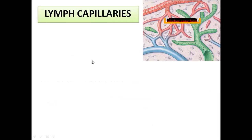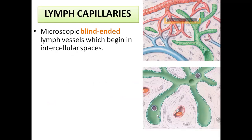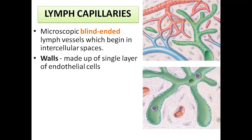Lymph capillaries are microscopic, blind-end lymph vessels which begin in intercellular spaces. If you observe a lymph capillary, they are lined with endothelial cells and have large gaps. Compared to the venous end of the capillaries, lymphatic capillaries have large openings so as to allow large molecules to enter, which can then be drained to the heart. The walls are made up of a single layer of endothelial cells.